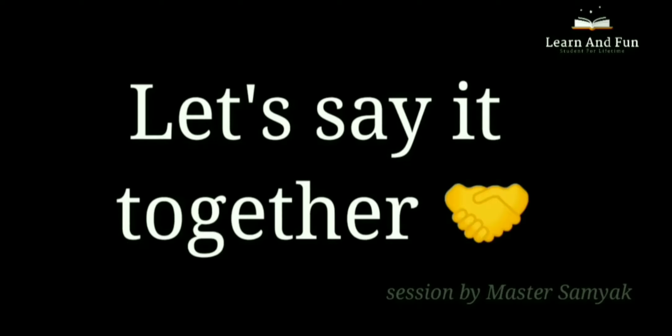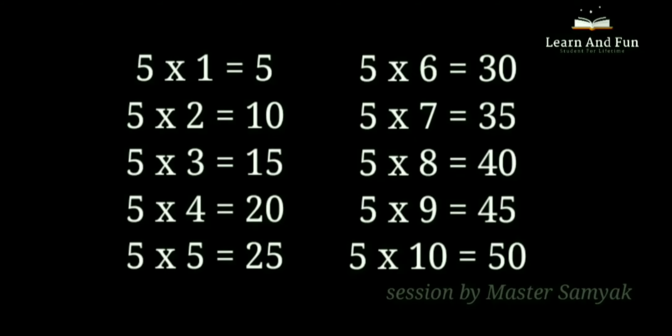Let's say it together. 5 ones are 5. 5 twos are 10. 5 threes are 15. 5 fours are 20. 5 fives are 25. 5 sixes are 30. 5 sevens are 35. 5 eights are 40. 5 nines are 45. 5 tens are 50.